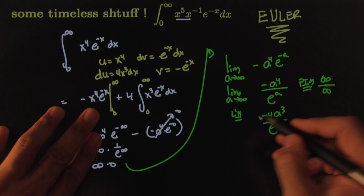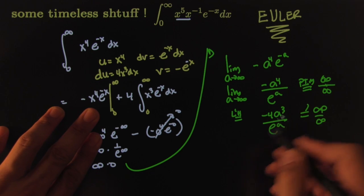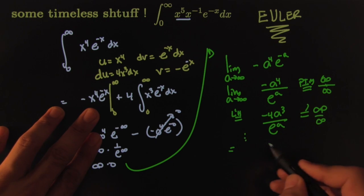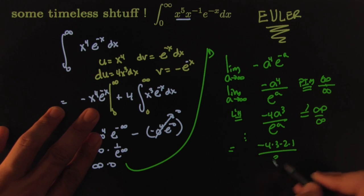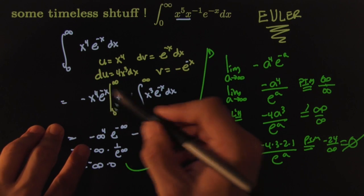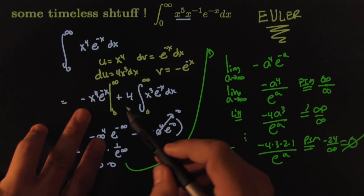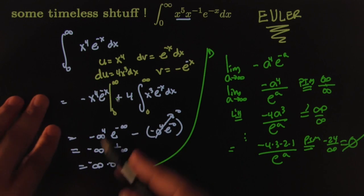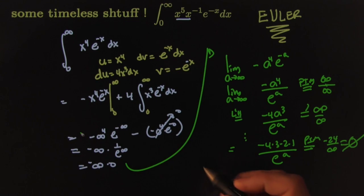Take the limit again. You get infinity over infinity. Do it a few more times. You get negative four times three times two times one, all over e to the a. You try the plug-in method and of course you get negative 24 all over infinity, which would give you a big fat zero. So all that work was just to handle this piece that was giving us an indeterminate form. This goes to zero.